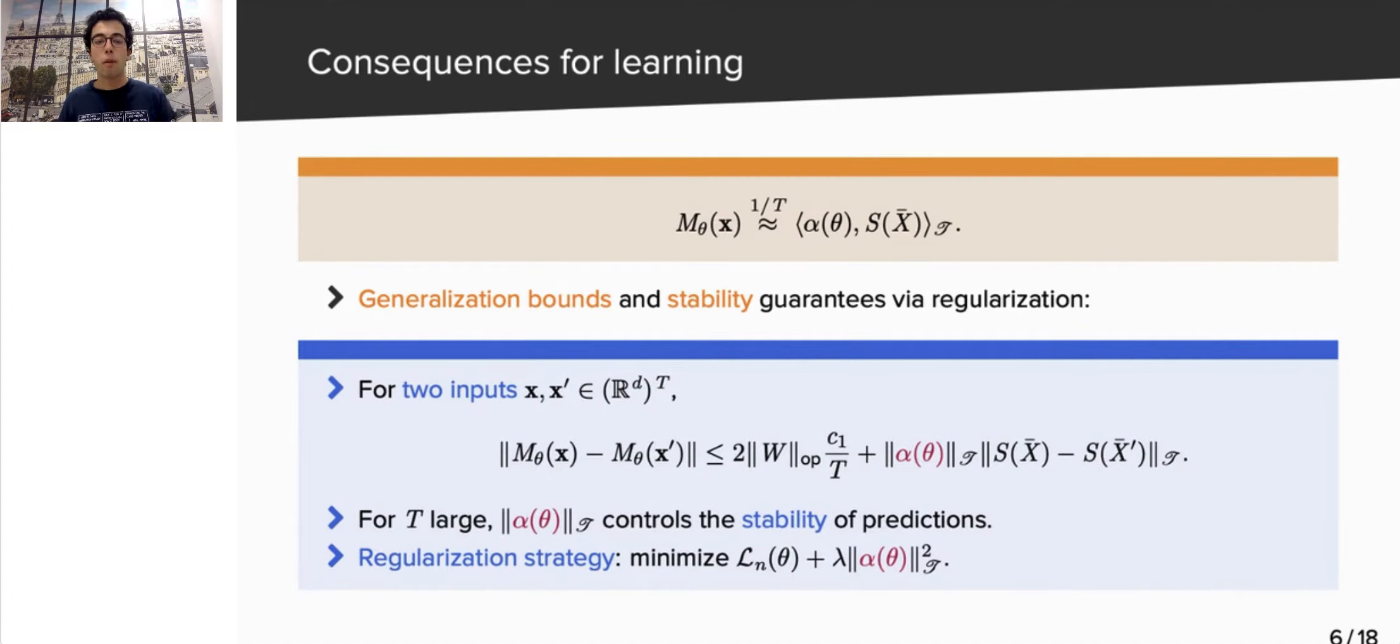Take two inputs, X and X prime. The goal is to ensure that the corresponding outputs are close if the inputs are close. With our result, a straightforward calculation, using the bilinearity of the scalar product and the Cauchy-Schwarz inequality, yields the bound you can see on the screen. As you can see, the crucial quantity to control the bound is the norm of alpha of theta in the Hilbert space T. This result suggests to use this quantity as a regularizer at training time, which is a similar idea to kernel ridge regression. We will come back to that later.